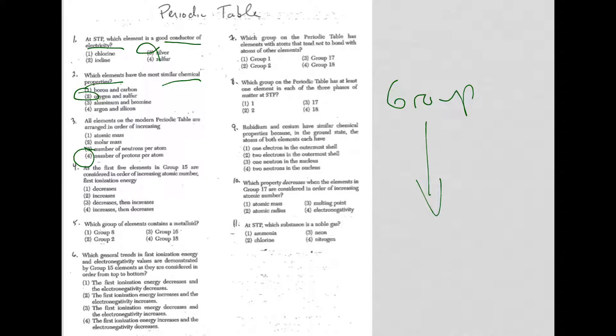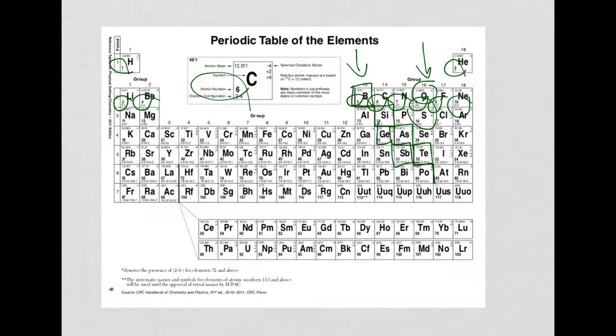Question four. As the first five elements in group 15 are considered in order of increasing atomic number, what happens to ionization energy? Okay, so increasing atomic number group 15. Let me erase this. Let's find group 15. The atomic number is increasing as I go down the group. And we want to know what's happening with first ionization energy.